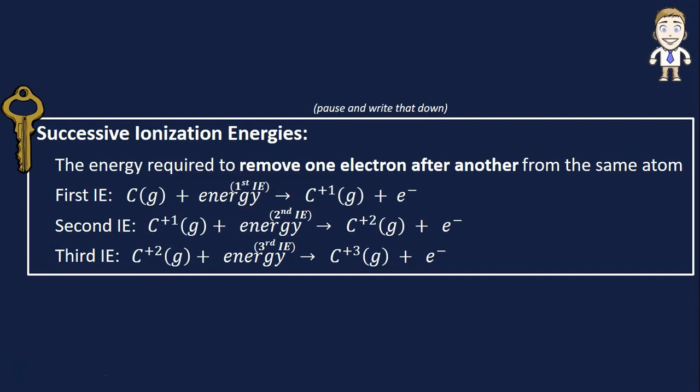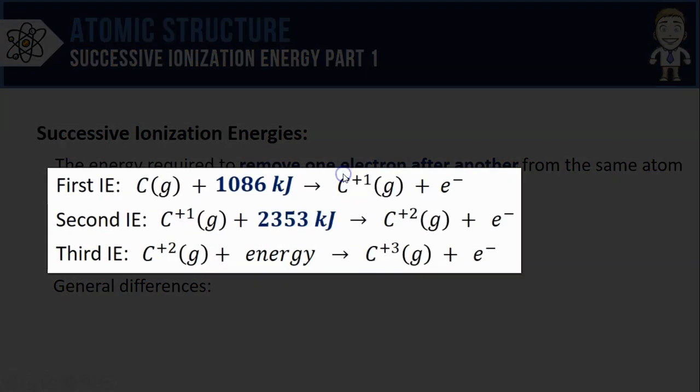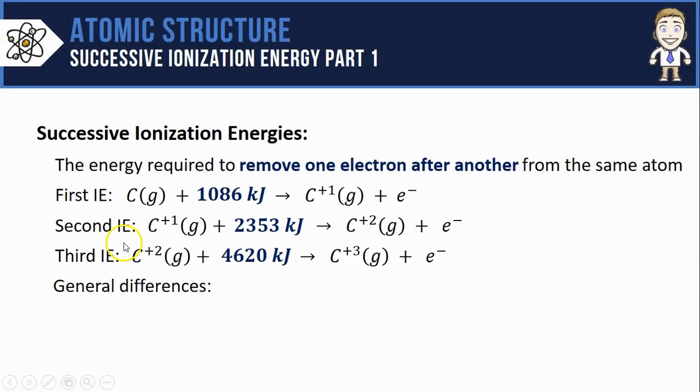Make sure you've paused and taken a minute to write those down. We can also start to take a look at some of the general differences between the amount of energy it takes to remove one electron after another. I'll show you that by putting in the exact amounts of energy required to remove the electrons here from this carbon atom: the first 1086, 2353, and 4620. You should notice right away that more energy is required to remove each successive electron.